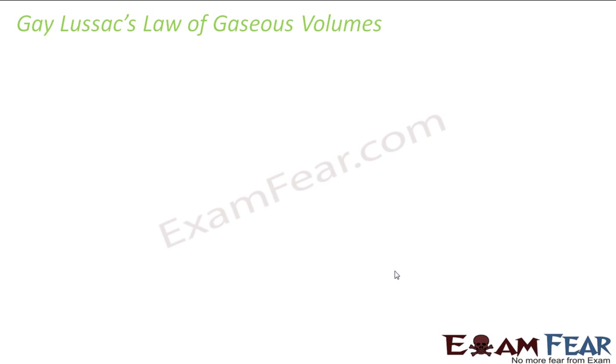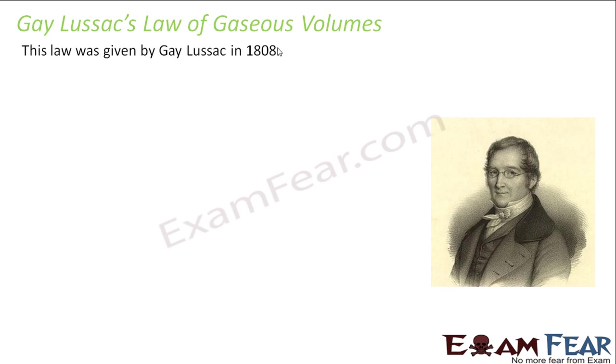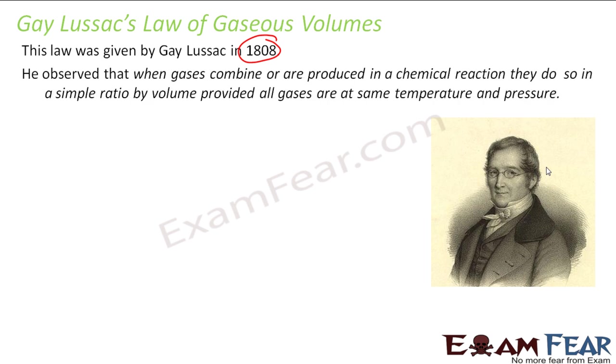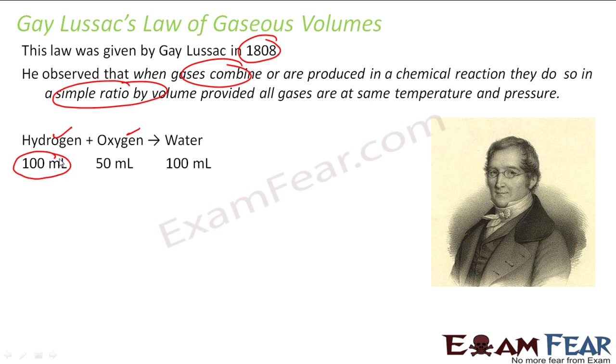Then you have Gay-Lussac's Law of Gaseous Volume. This was given in 1808, not very far from the previous law. This was by Gay-Lussac and he observed that when the gases combine or they are produced in a chemical reaction, they do so in a simple ratio by volume, provided all the volumes of gas are at same temperature and pressure. For example, hydrogen and oxygen, 100 milliliter of hydrogen reacts with 50 milliliter of oxygen to give 100 milliliter of water. So if you see, the ratio is simple. It is 100 to 50, that is 2 is to 1. The ratio is simple. It is never that 100 ml of this reacts with 49 ml of this. That is not the case. The ratio is generally simple when you talk about the gas reaction and that is what Gay-Lussac's Law of Gaseous Volume is.